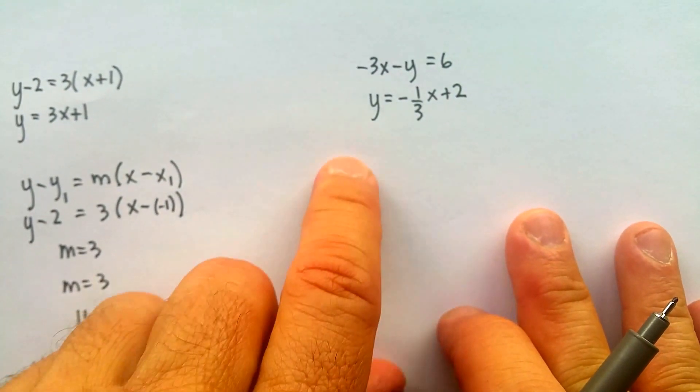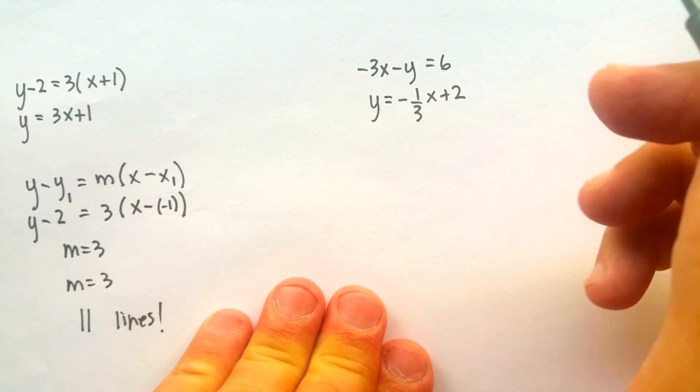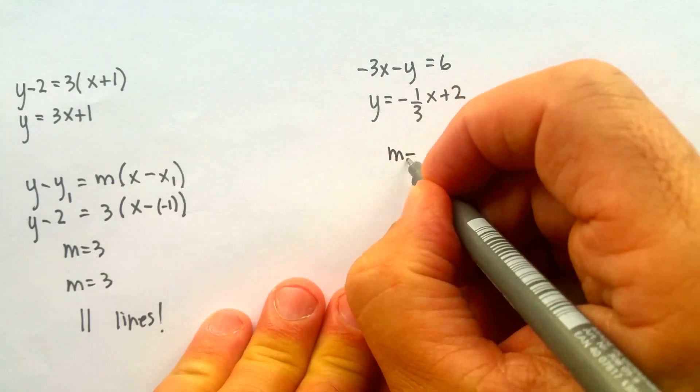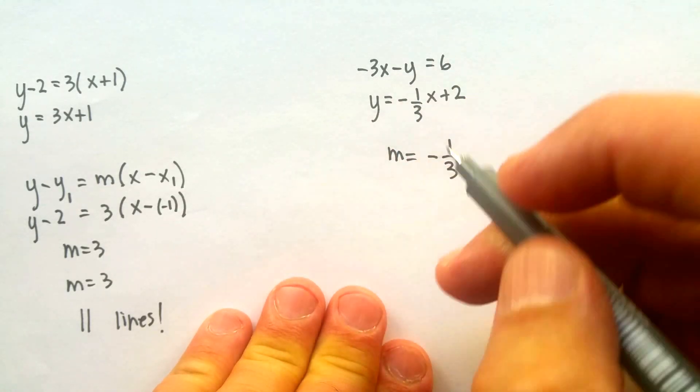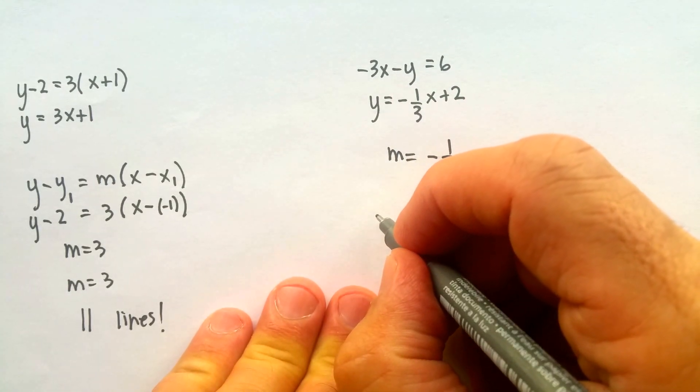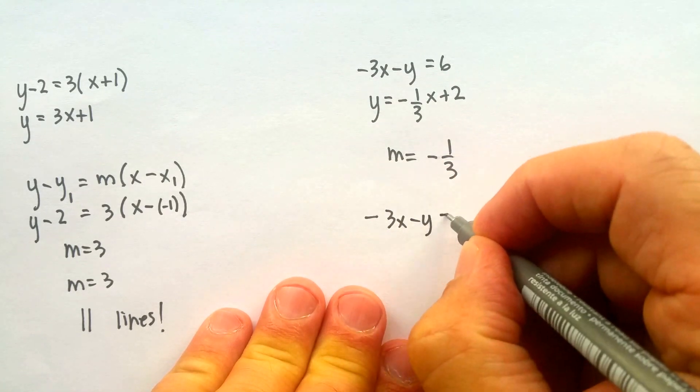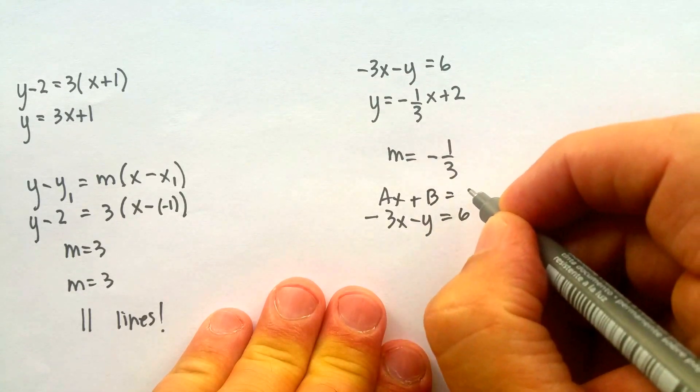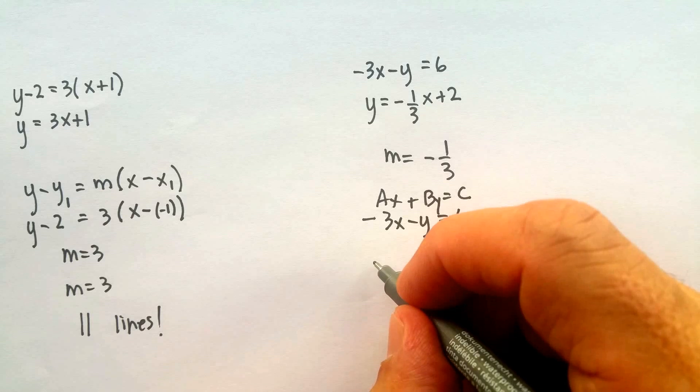Finally, let's just do this last one. These are again in the standard form and in the slope intercept form. We know that in this one, the slope is equal to negative one-third. But what about this top one? In standard form, negative 3x minus y is equal to 6. Ax plus By is equal to C. The A here would be negative 3.